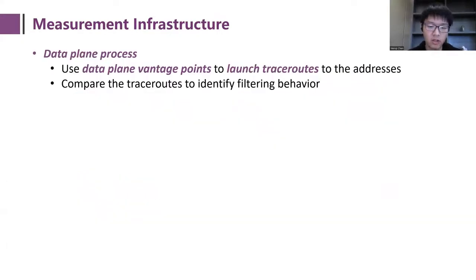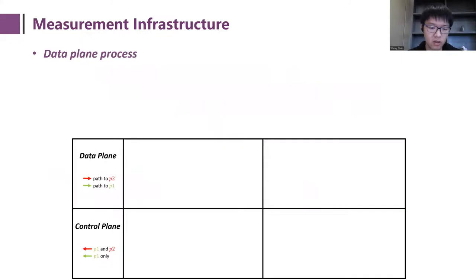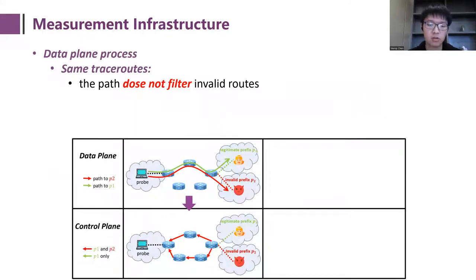Then in the data plane, we launch trace routes to the two live IP addresses from the vantage points. And as the table shows, there are two situations. The first situation is that the probe has identical AS-level paths to the legitimate and invalid prefixes. In this situation, the path to the legitimate prefix is not filtering invalid routes. This indicates that in the control plane, the path is not filtering the invalid route. Otherwise, the invalid route wouldn't be able to propagate along this path.